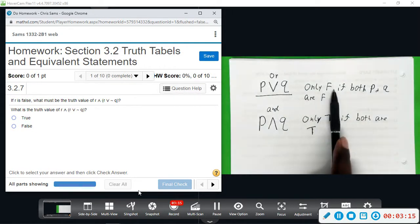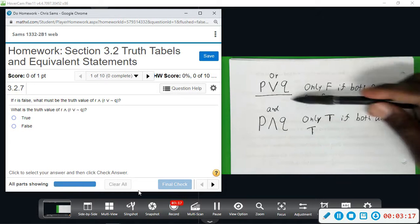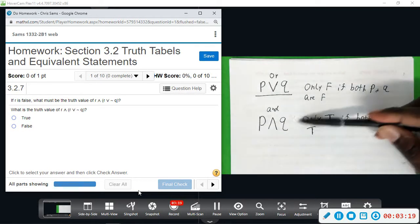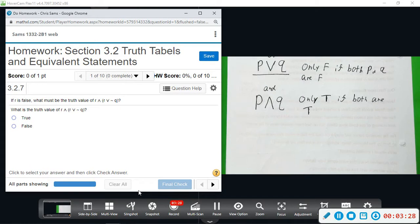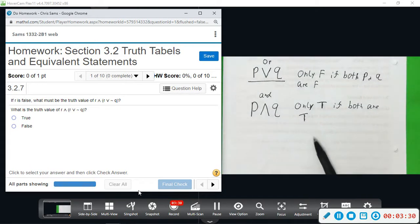This one, OR, is only false if they're both false - it's true in every other scenario. This, AND, is going to be false in every other scenario, one or the other being true. These are the main two parts that you need to look out for, and then we'll be doing some truth tables.